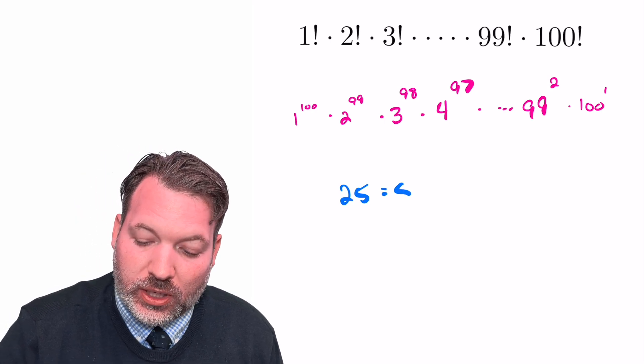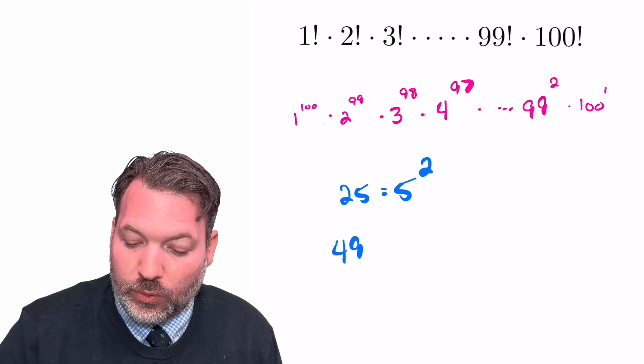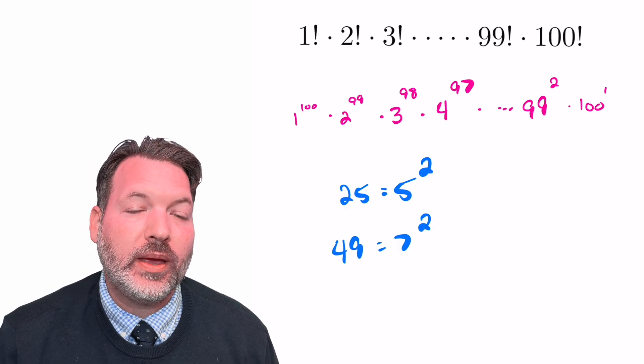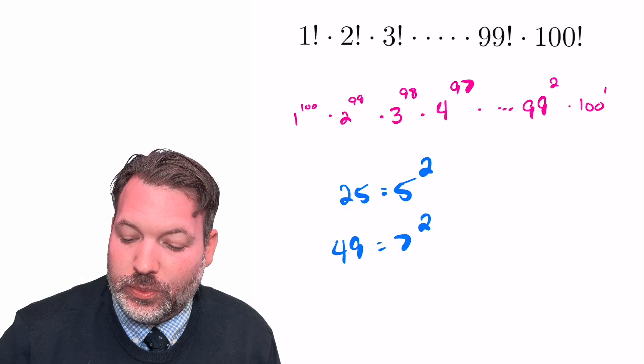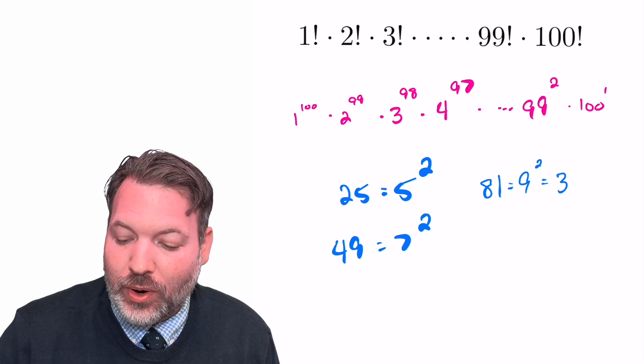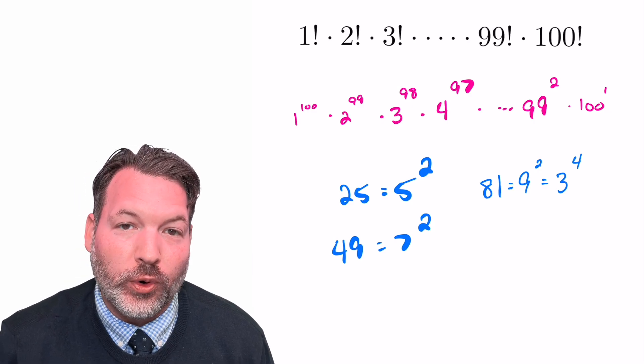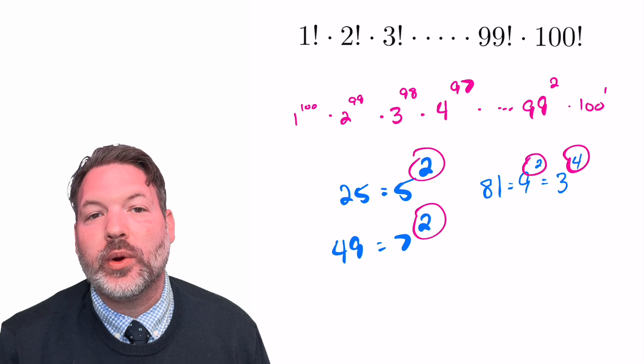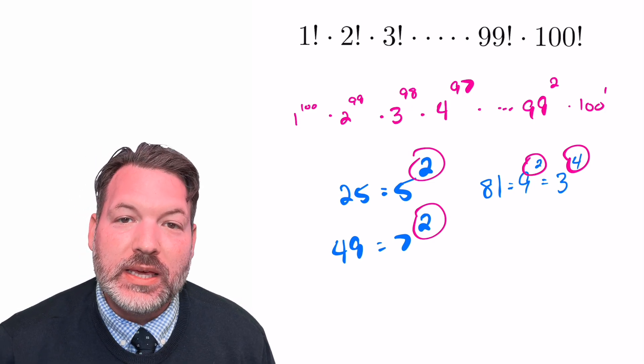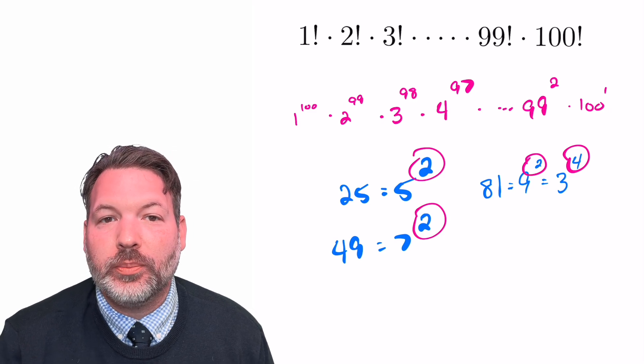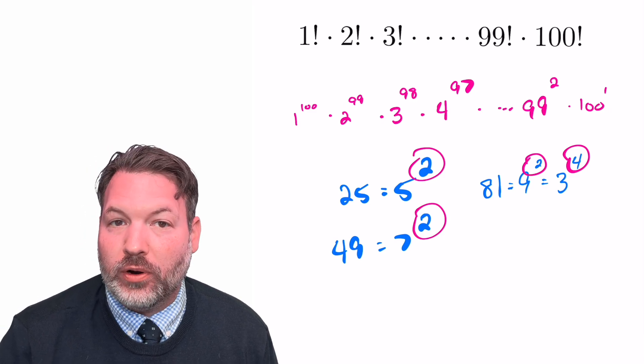25 is just 5 squared. 49 would be equal to 7 squared. But even for numbers that are not prime squares, we should be able to discern something about their exponents. Something like 81 is 9 squared, but if we write it in terms of primes, we can see it's 3 to the 4th power. What we should notice here is no matter how we try to write down a square number, the exponents are always even. Any number that's made up entirely of even powers of some exponential base is guaranteed to be a perfect square.